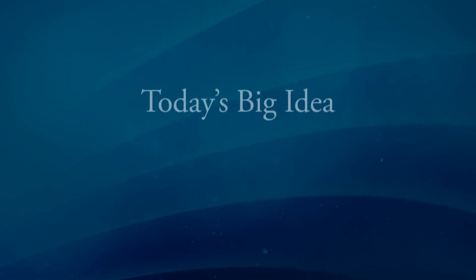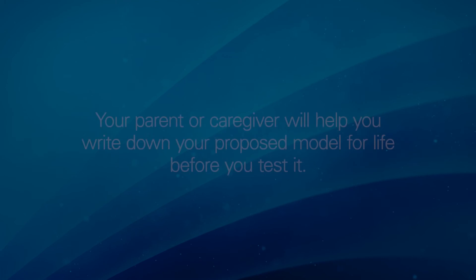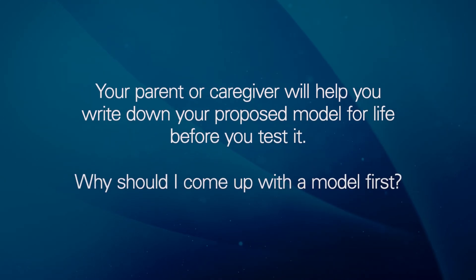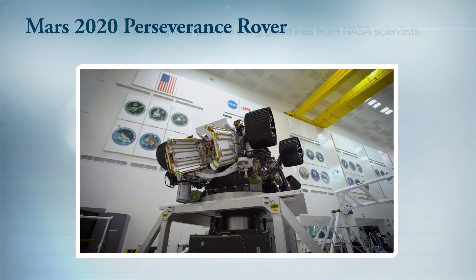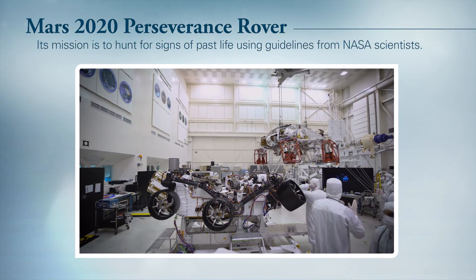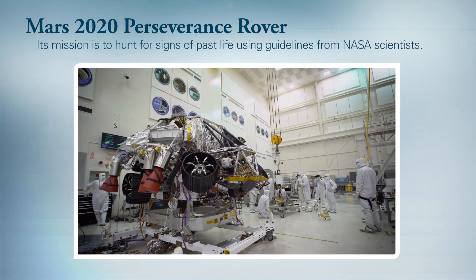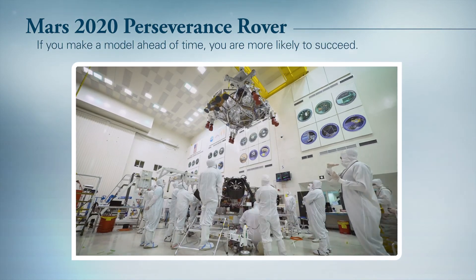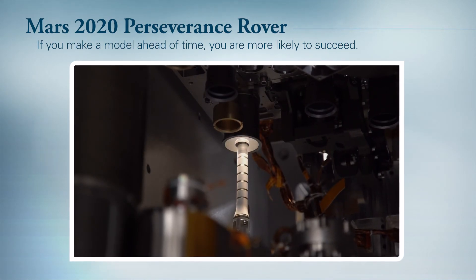Students, the big idea for today's STEM activity is to use the scientific method to develop a model of life characteristics that answers the question: what exactly makes something alive or not alive? Your parent or caregiver will help you write down your proposed model before you test it. You might be asking, why should I come up with a model first? NASA is getting ready to launch the Mars 2020 Perseverance rover. When Perseverance arrives on Mars, its job will be to hunt for signs of past life. It makes the rover better at its job if NASA scientists can tell Perseverance ahead of time what to look for — so if you make a model or list ahead of time, you, like the NASA scientists, are more likely to succeed as you hunt for signs of life in some alien soil samples your parent or caregiver has brought to you.